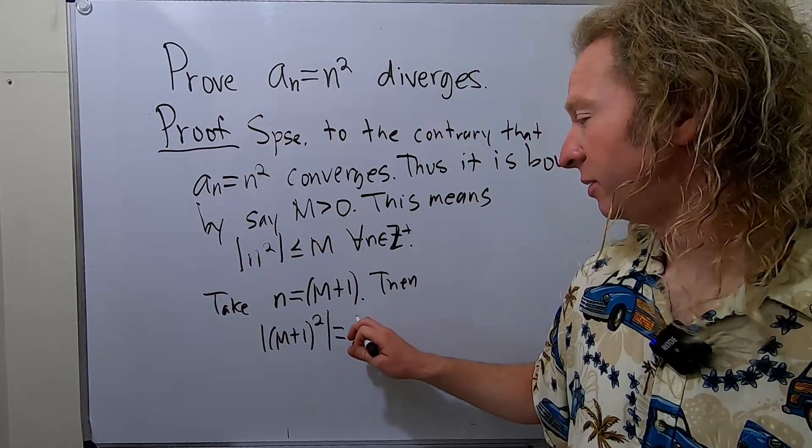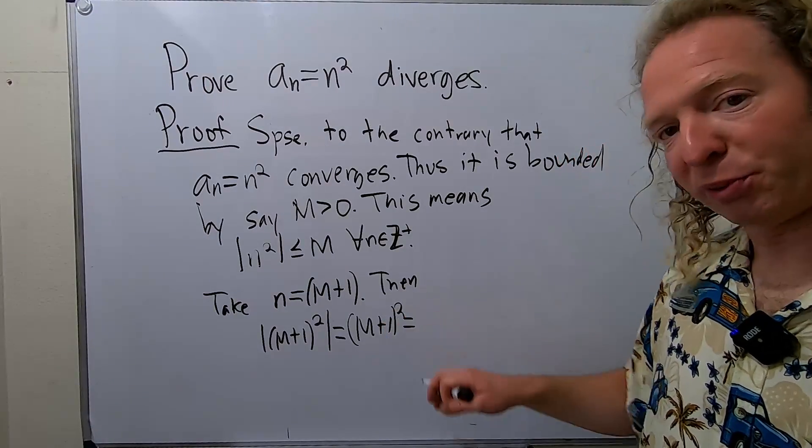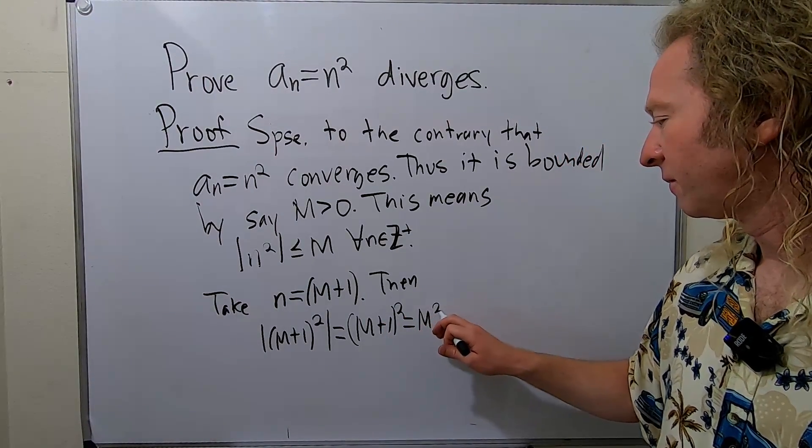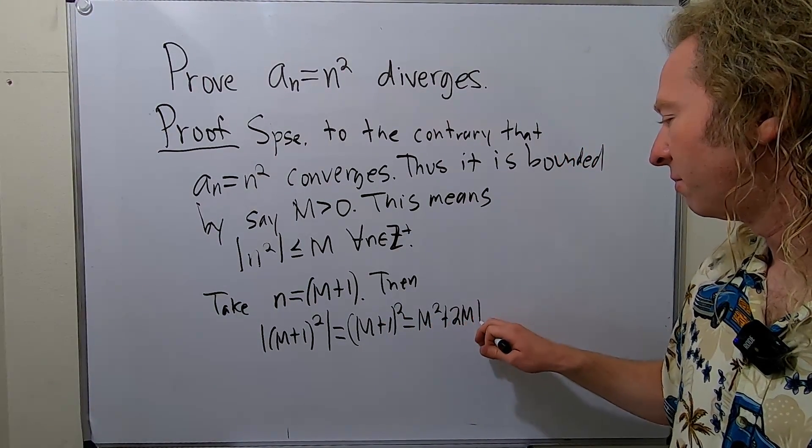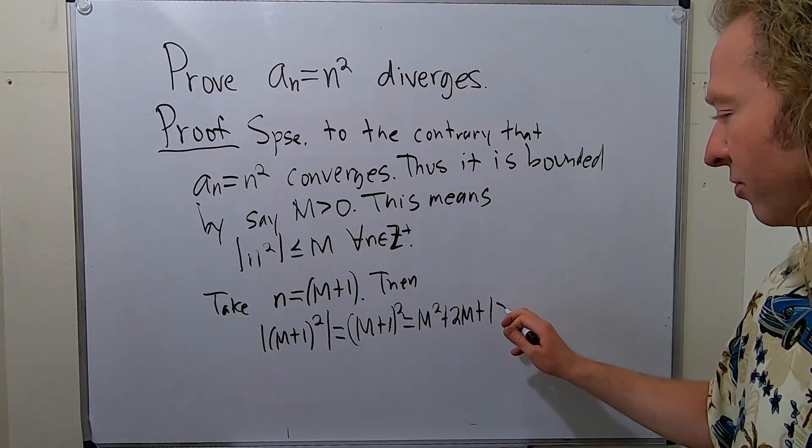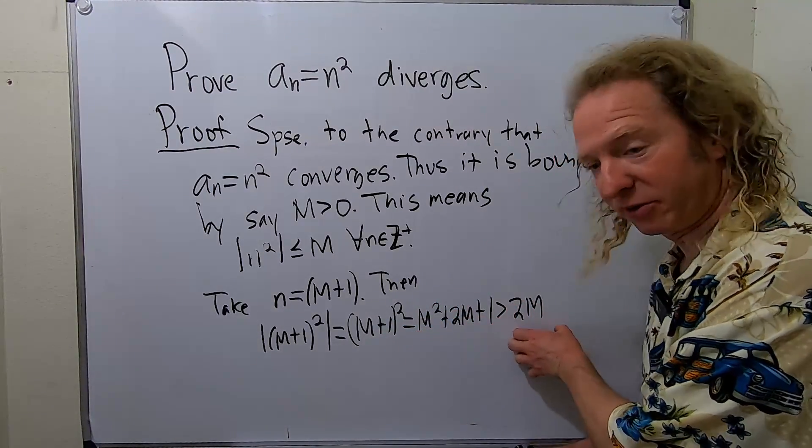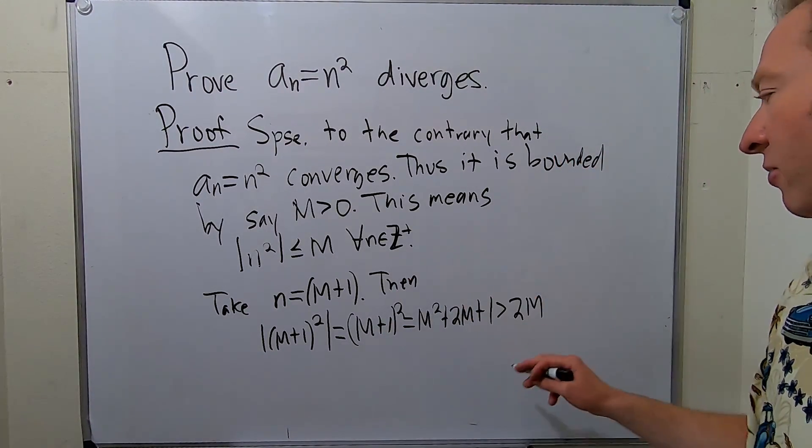Well, that's equal to (M+1)² because it's already positive. You multiply it out, you get M² + 2M + 1. Well, M² is positive and 1 is positive, so this is certainly bigger than 2M. Because these are bigger than 0, this is obviously bigger than 2M. And 2M is bigger than M.